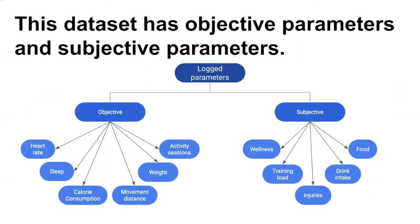All the collected data parameters can be divided into two categories: objective parameters and subjective parameters. As the objective parameters, we can identify heart rate, sleep, calorie consumption, movement distance, weight, and activity sessions. Under the subjective parameters, we can identify wellness, training load, and injuries.